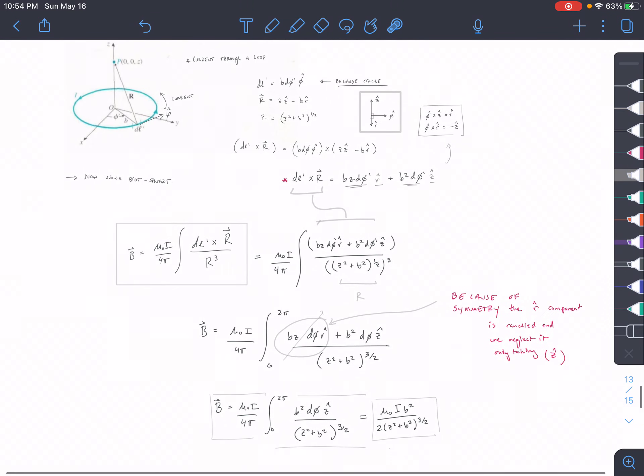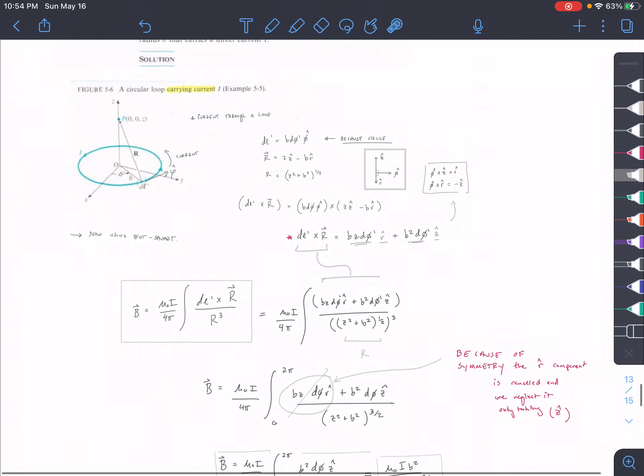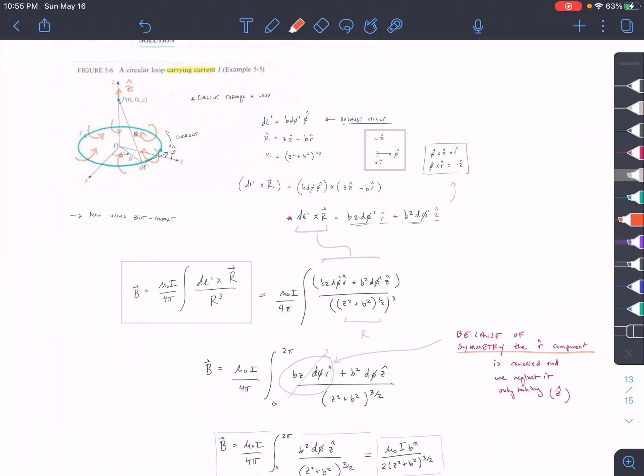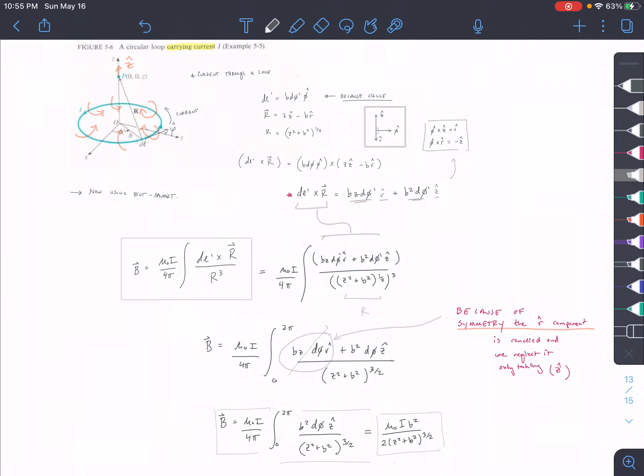So this is where things get weird, because we essentially are dropping out this R term. Because of the symmetry of the R component, we know that it's canceled, and we're neglecting it and only taking the Z-hat component. So we kind of did this in earlier problems, but we didn't really talk about it in the same way.